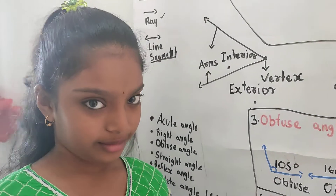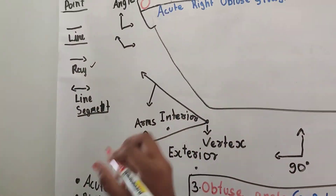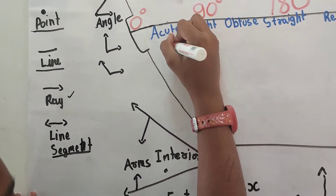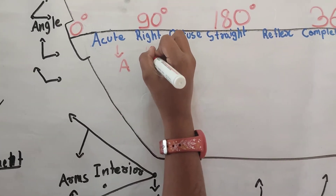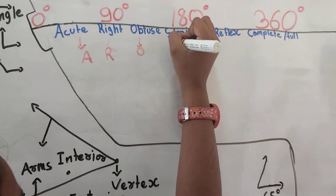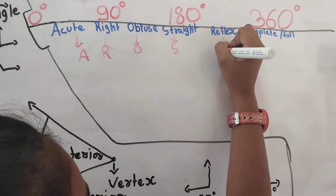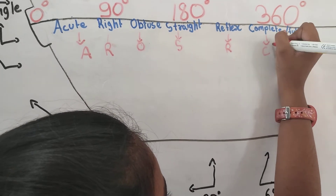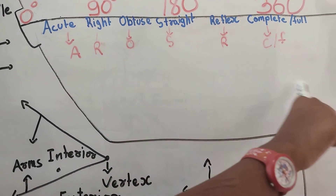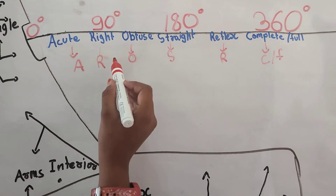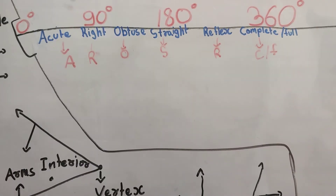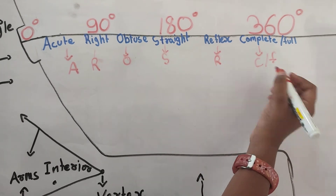Now, let us see the code. Take all the starting letters of every angle type: A, R, O, S, R, C or F. If you remember this, you can easily recall acute angle, right angle, obtuse angle, straight angle, reflex angle, and complete or full angle. So: A, R, O, S, R, F or C.